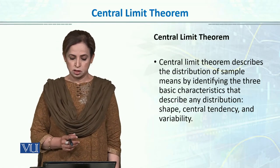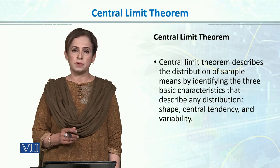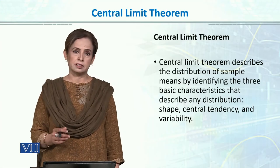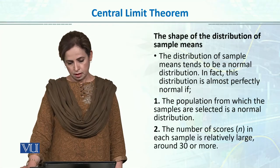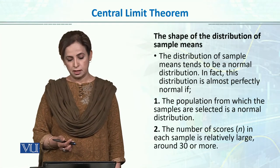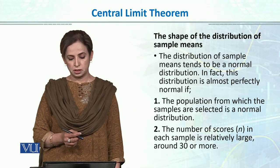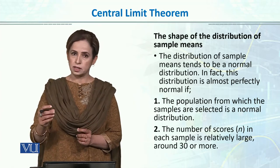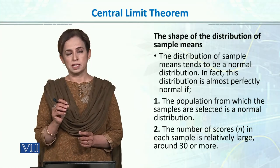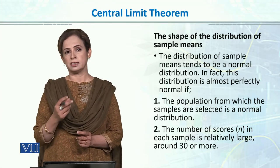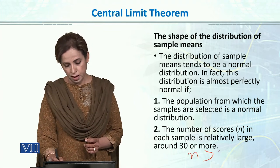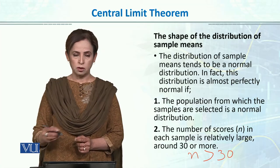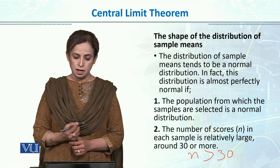The Central Limit Theorem describes the distribution of sample means by identifying three basic characteristics that describe any distribution: shape of the distribution, central tendency, and variability. Regarding shape, the distribution of sample means tends to be a normal distribution — in fact it becomes almost perfectly normal as n increases. If n is greater than 30, the distribution will be exactly normal.